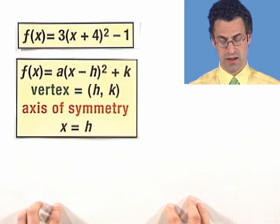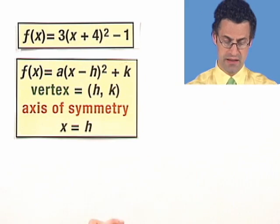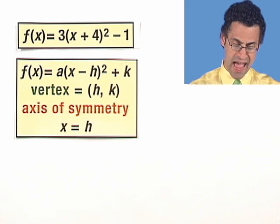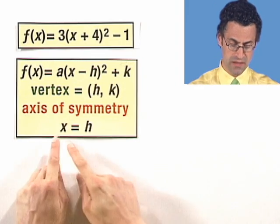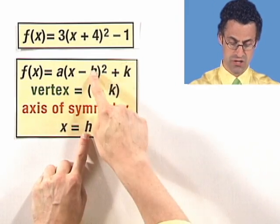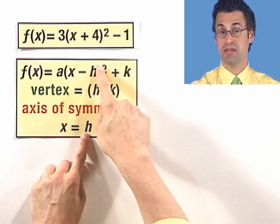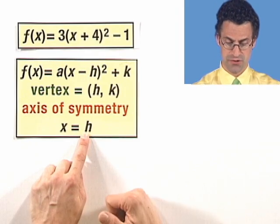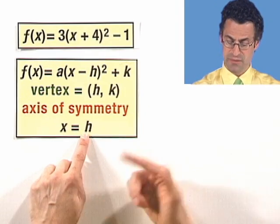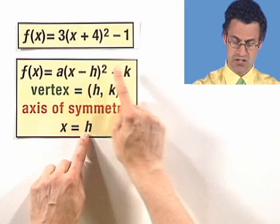And if you can express it that way, then you can just read off the information. For the axis of symmetry, it's nothing more than the line x equals h, that number right there. It's going to be a vertical line to denote the axis of symmetry. And the vertex can be read off by just saying it's h comma k.